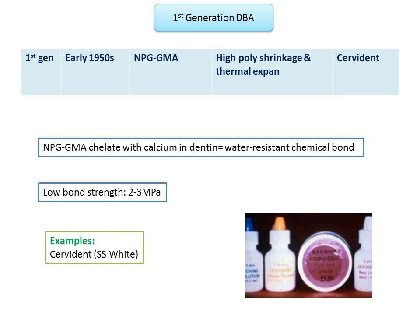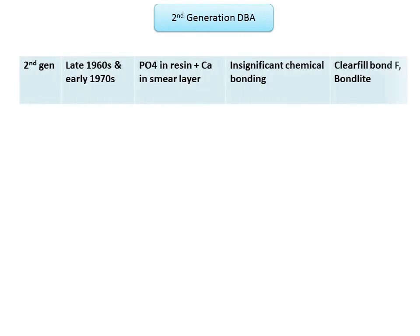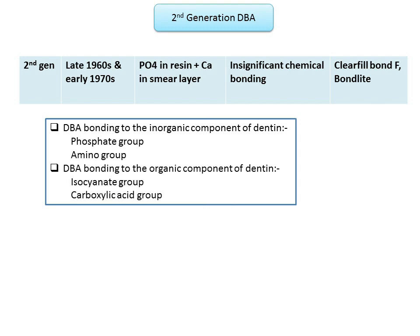The second generation dentinal adhesives were introduced in the late 1960s and early 1970s. Their characteristic feature was the combination of phosphate in resin with calcium in the smear layer. These agents attempted to bond chemically to either the inorganic or organic components of dentine. Those bonding to the inorganic component contained a phosphate or amino group, while those bonding to the organic component (collagen) consisted of isocyanate and carboxylic acid groups. The major drawback was limited bond strength of about 5 to 6 MPa.